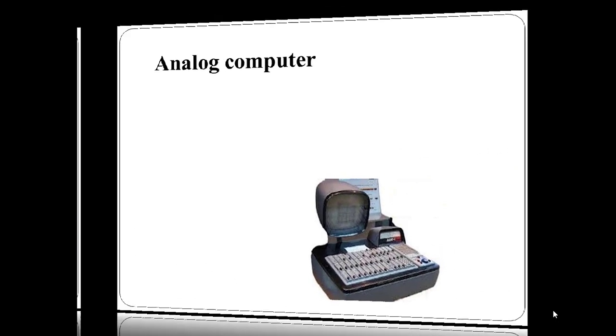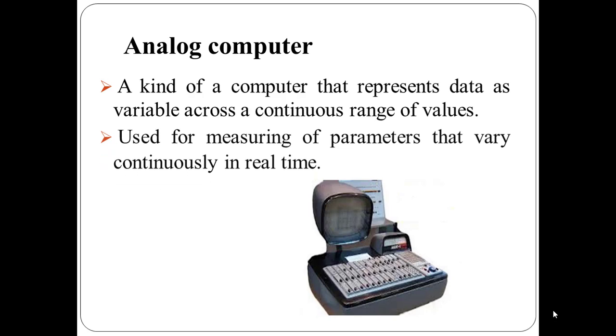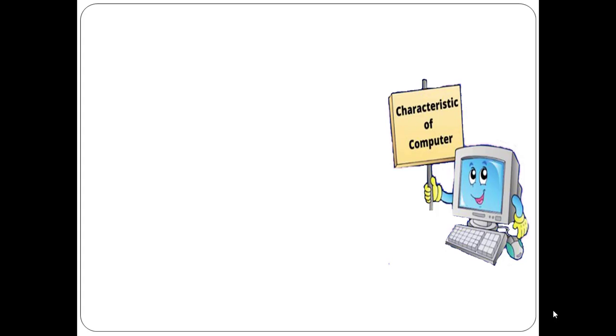Now, analog computer. Analog computer is another kind of computer that represents data as a variable across a continuous range of values. The earliest computers were analog computers. Analog computers are used for measuring of parameters that vary continuously in real time such as temperature, pressure, and voltage. Analog computers may be more flexible but generally less precise than digital computers. Slide rule is an example of analog computer.